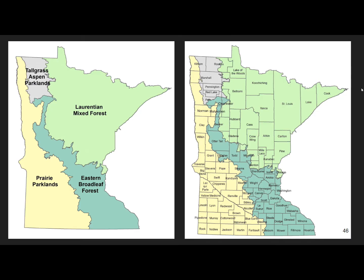The eastern broadleaf forest is also known as our hardwood forests, and that follows along the center to the southeastern portion of the state. The tallgrass aspen parklands is a pocket in the northwestern part of the state that's a transition zone from the prairies to the forests. And finally, the prairie parklands biome on the western and southwestern portion of the state is where most of our grasslands occur. This is also the key area for agriculture.